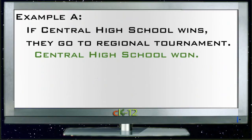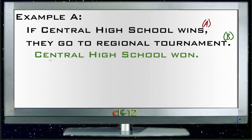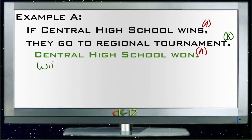So what we have is an A→B statement. Our first statement, A, says if Central High School wins, and our B statement says they go to a regional tournament. Then we have a reflection of our A statement below as part of our logical deduction — it says Central High School won. So based on the original statement, if Central High School wins then they go to a regional tournament, and Central High School won, so that means Central High School will go to regionals.